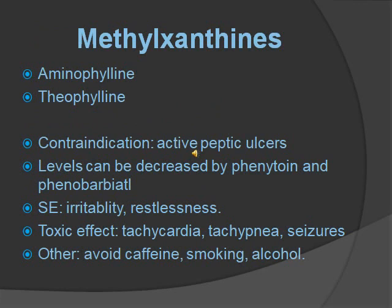Methylxanthines relax the bronchial smooth muscle by causing bronchodilation. This class includes aminophylline and theophylline. Contraindications are active peptic ulcers, and it interferes with phenytoin and phenobarbital. Side effects are irritability and restlessness. Toxic effects cause tachycardia, tachypnea, and seizures. You should avoid caffeine, smoking, and alcohol. If it's at a toxic level, stop the infusion, give activated charcoal, and treat the symptoms.